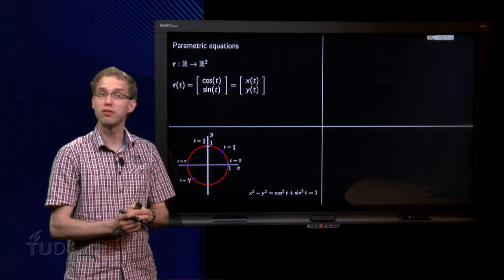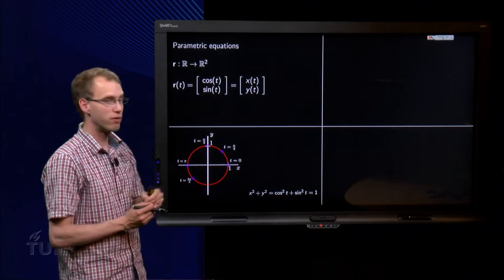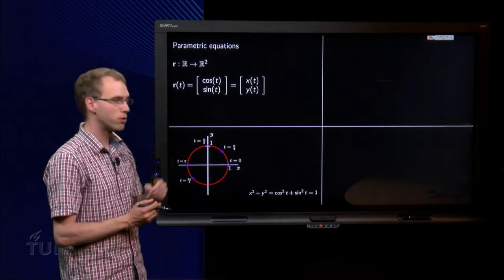Try some other value of t, for example t equals π/2. We get cos(π/2) equals 0, sin(π/2) equals 1, and then we get to the point here.